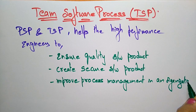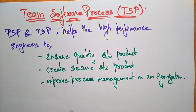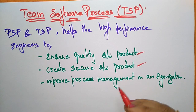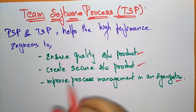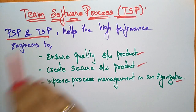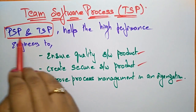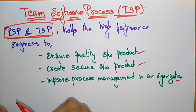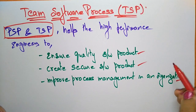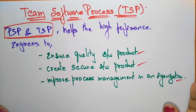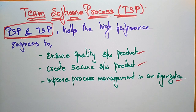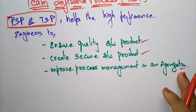So if you need a quality software product, a secure software product, and want to improve process management in an organization, then you have to follow the Personal Software Process and the Team Software Process. If you follow both of these, you can ensure quality, create secure software, and improve process management. Any engineer who wants to reach high performance has to follow PSP and TSP techniques.